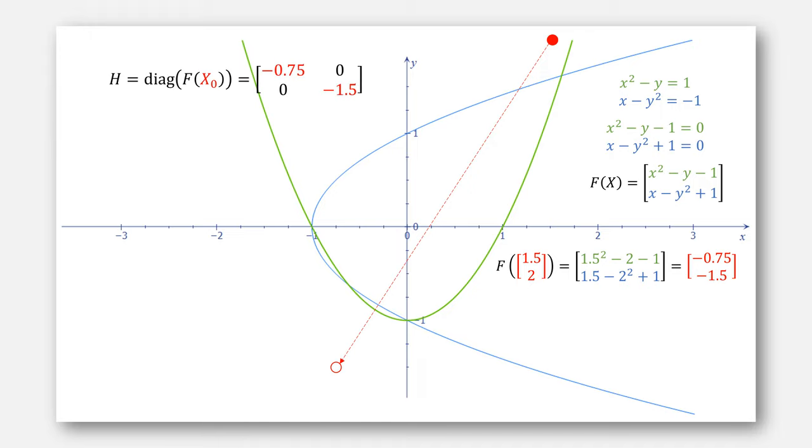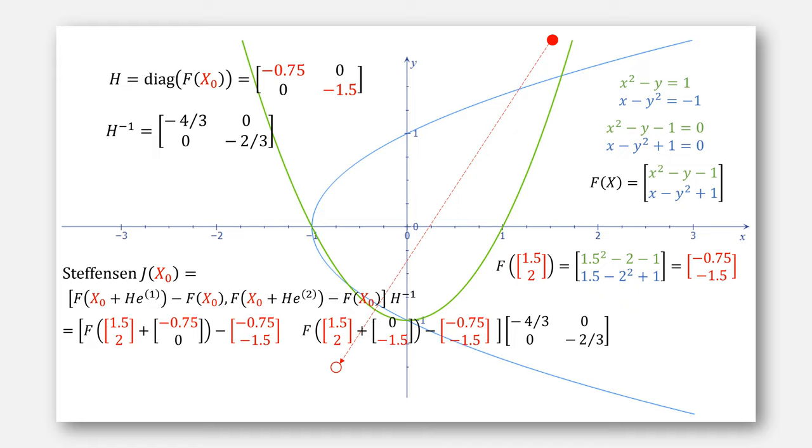We'll need the diagonal matrix H, which we just plug in, and then compute the inverse of H. We'll then use all this information to compute our Jacobian approximation using Steffensen's method, giving this result for the Jacobian.